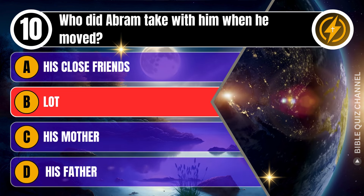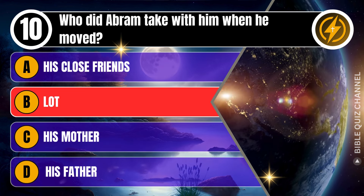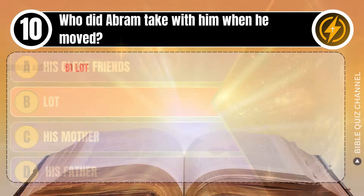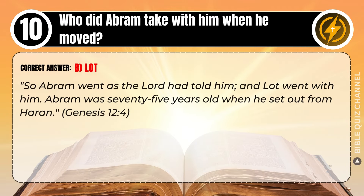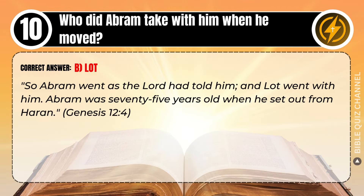Correct answer: B. Lot. Explaining the Bible — So Abram went as the Lord had told him, and Lot went with him. Abram was 75 years old when he set out from Haran. Genesis, chapter 12, verse 4.